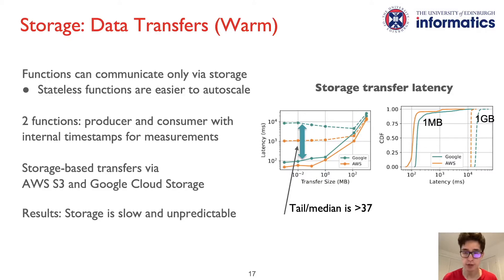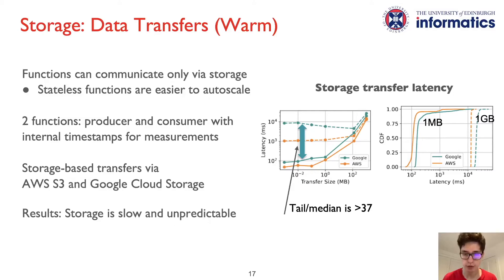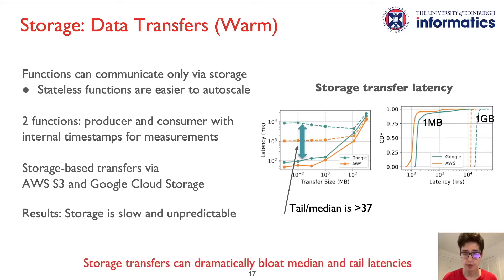Next, we study the data communication delays for an application of two functions, where one function transmits a payload of a configurable size to the second function. Since functions are stateless, data is transmitted via a storage service, with the first function saving a payload to storage and the second function loading the payload from storage. We capture these latencies with timestamps placed by the user code in these functions. The invocations are triggered frequently, making sure that no cold starts are observed. On the left chart, one can see the median latency shown with solid lines and the tail latencies shown with dashed lines. Storage transfers are slow and have very unpredictable response time. For example, for a 1MB transfer in Google, these delays result in a mere 150ms median and 6 seconds of tail latency, yielding a tail-to-median ratio of nearly 40.